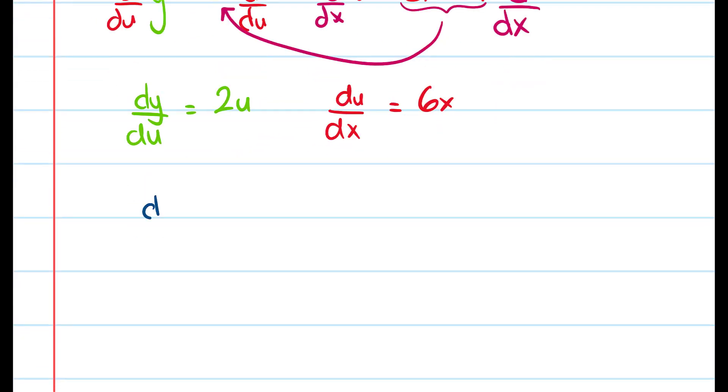And so I have dy/dx is equal to dy/du times du/dx. Dy/du is 2u and du/dx is 6x.